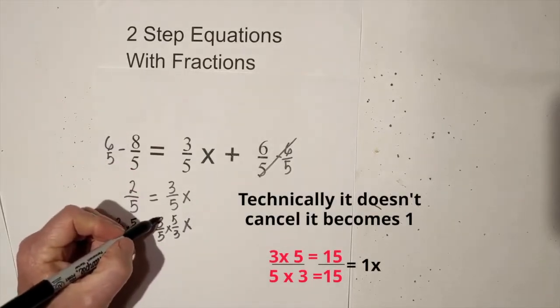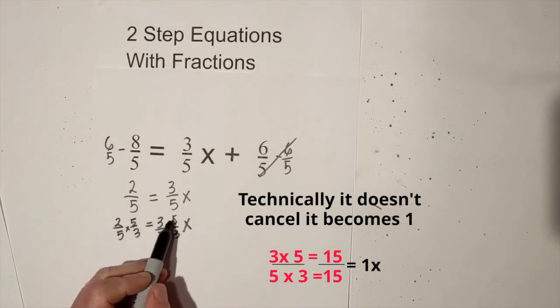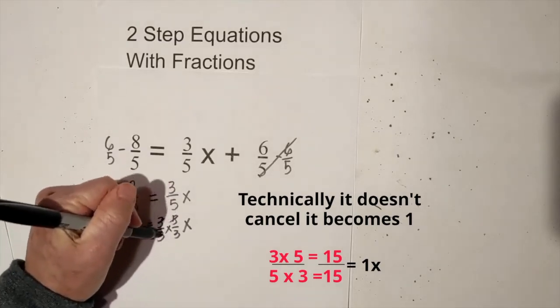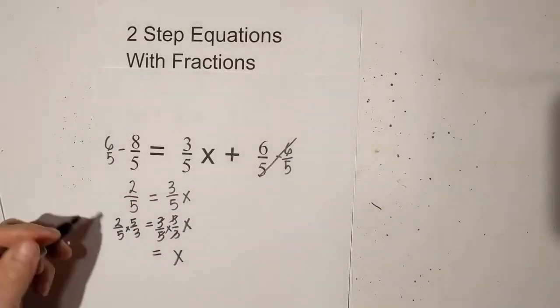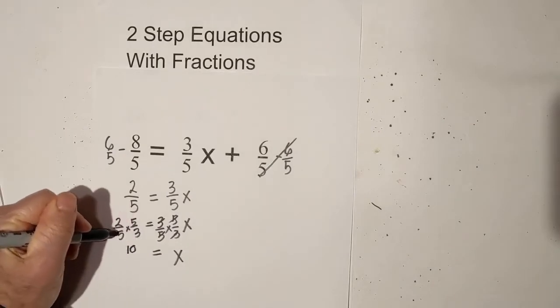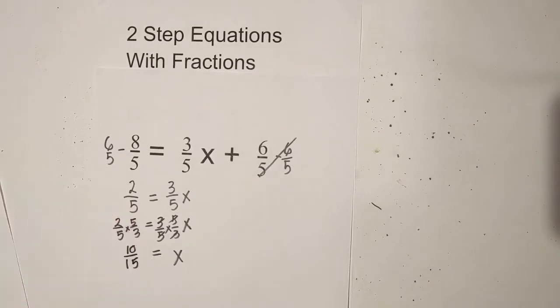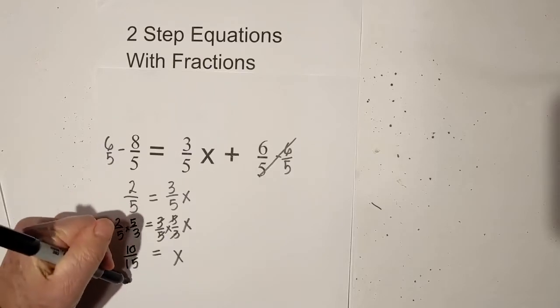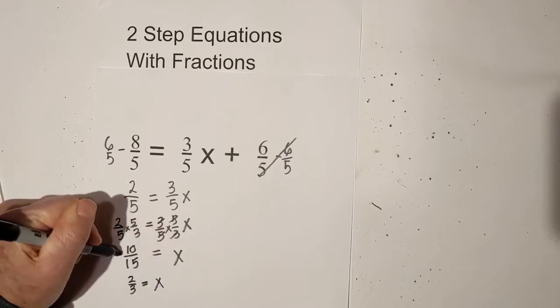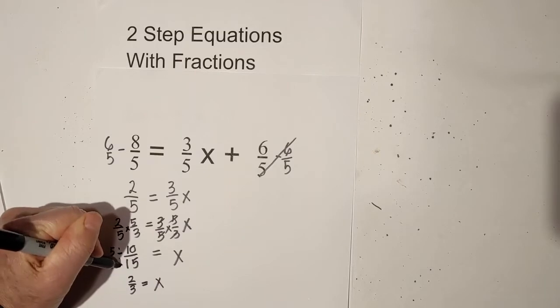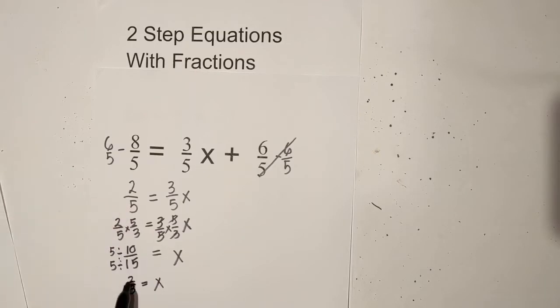So now these cancel because you end up three times five is fifteen, five times three is fifteen, so they all cancel out. So we have x. Let's bring this down and now two times five is ten, five times three is fifteen. So x is equal to ten over fifteen and I can reduce that down to two-thirds by dividing everything by five. Five goes into ten two times, five goes into fifteen three. So there's your answer, x is equal to two-thirds.